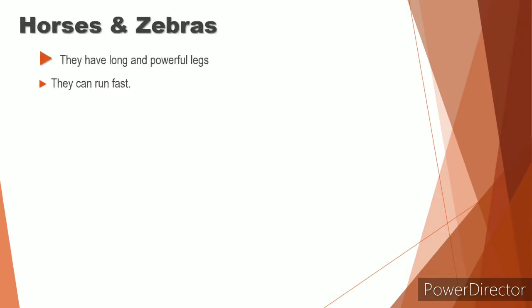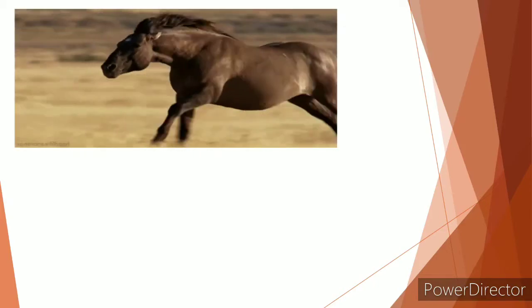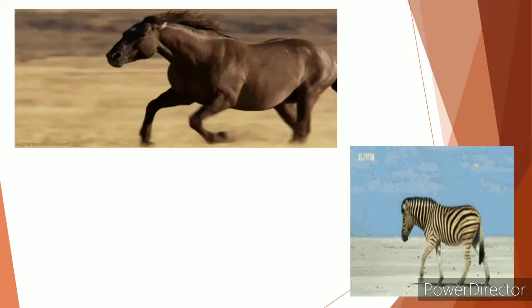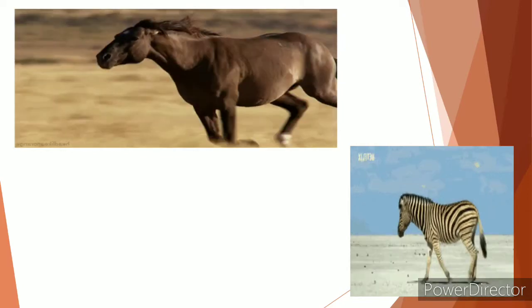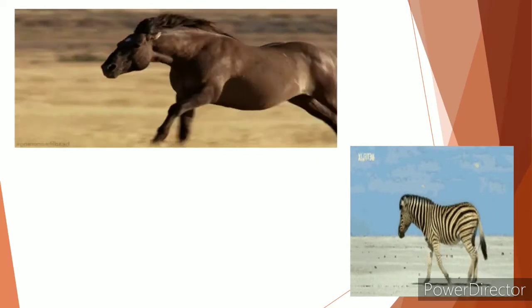Now let's talk about the movement in different animals. Horse and zebras. They have long and powerful legs and they can also run very fast. See the powerful and strong legs of a horse and zebra. How the horse is running. It's beautiful.